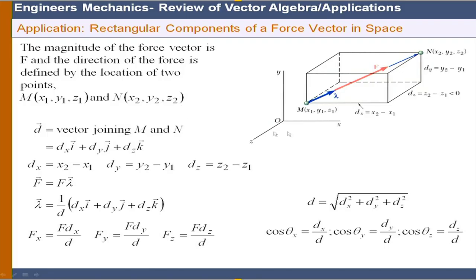In applications, the magnitude of the force vector is F and the direction is defined by the locations of two points. Force is applied at point M and its direction is determined by two points through which the force passes. We get the unit vector from two known points in space, then force = magnitude × unit vector. Getting the unit vector plays an important role in solving problems.